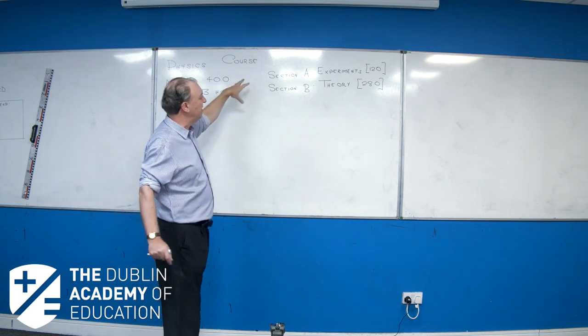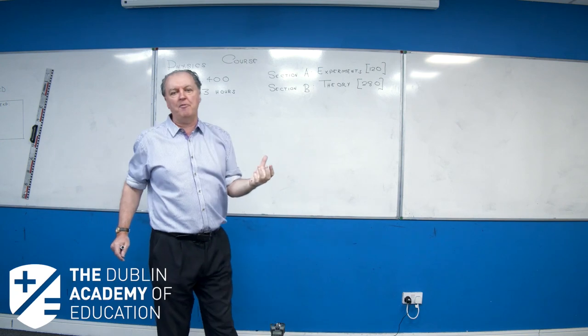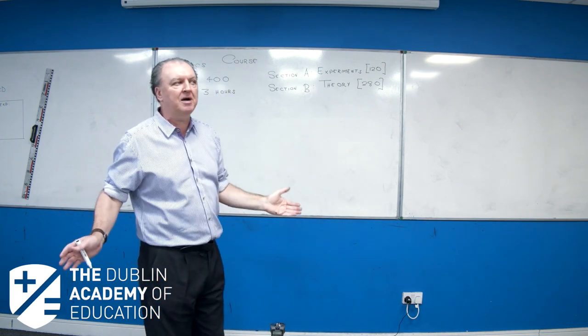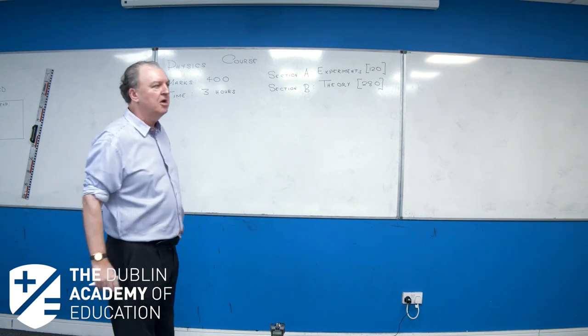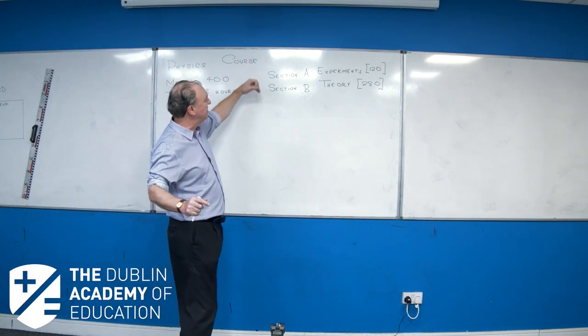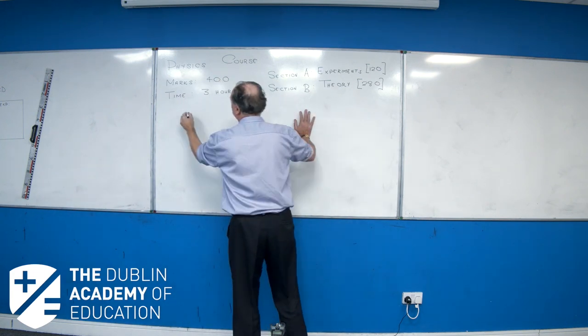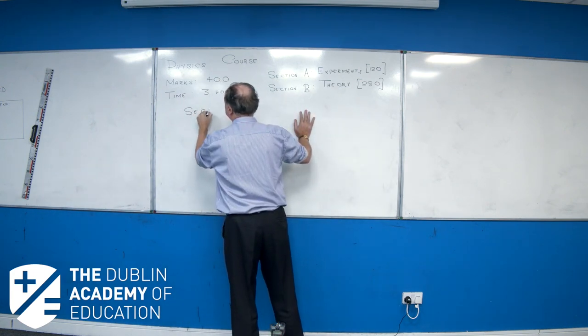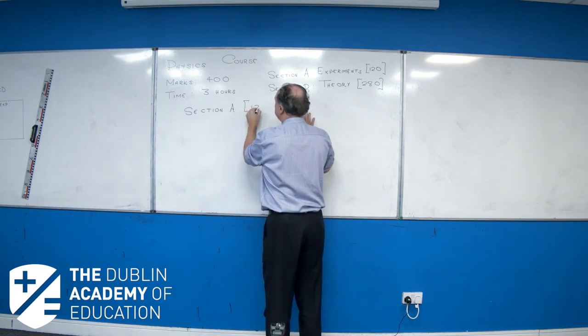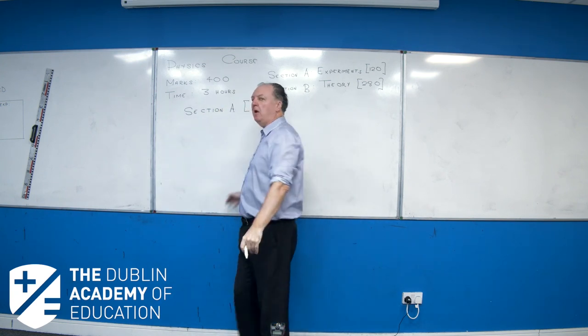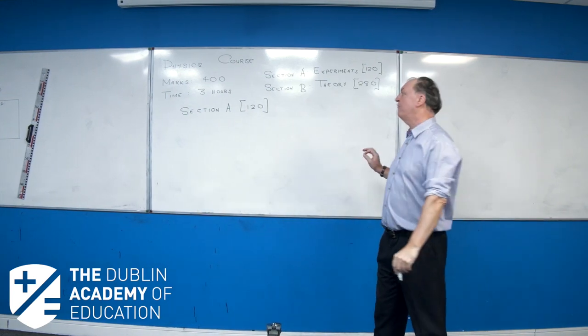The time I'm going to devote to Section A would be one hour. I would start with Section A. I wouldn't look at Section B at this stage. I would try and build up my confidence. We're all a bit nervous going into an exam. We're very eager to find out what questions are being asked. But I would say forget about Section B. Just start with Section A. So Section A is the experimental section, 120 marks. How long will I spend on that section? I would say a maximum of one hour.